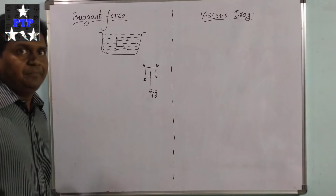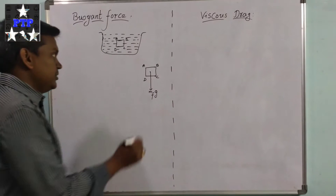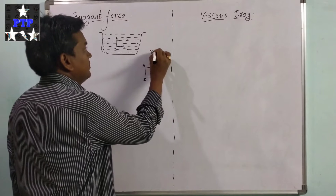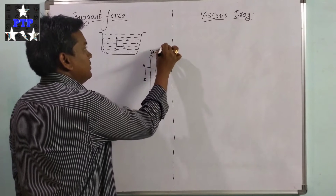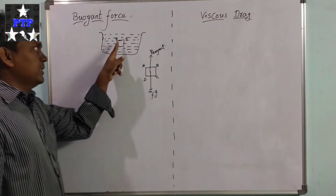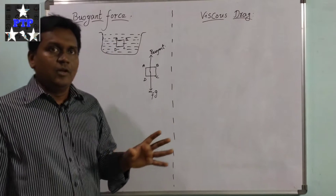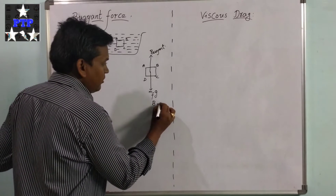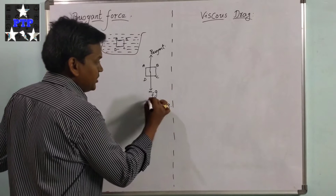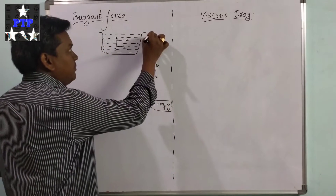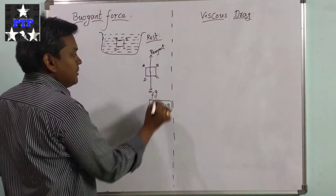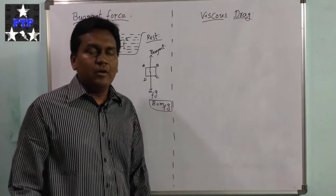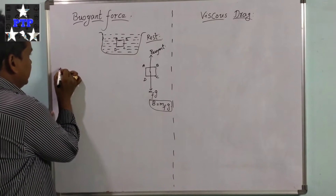The mass of the fluid m_f has gravity acting vertically downward, and this is balanced by an upward biont force. When this part of the fluid A B C D is at rest, biont force B equals m_f times g.